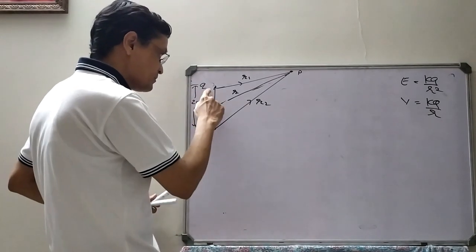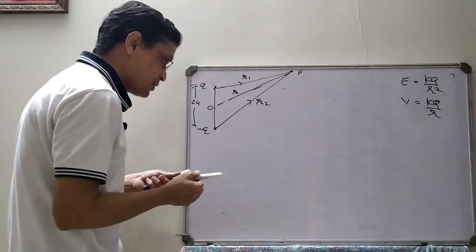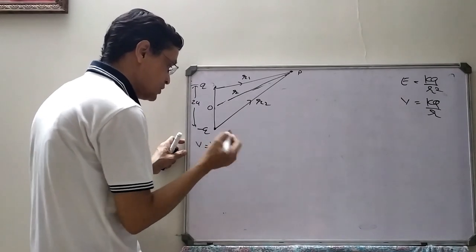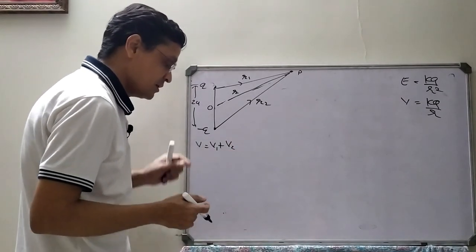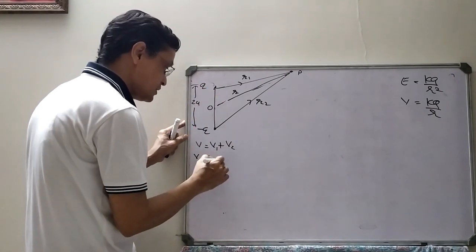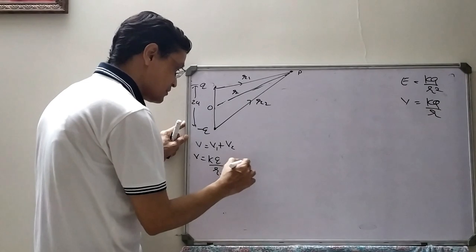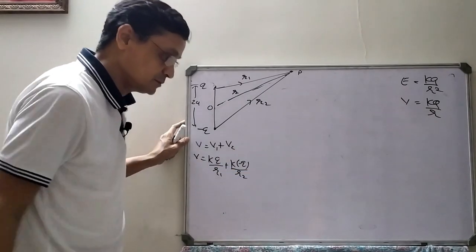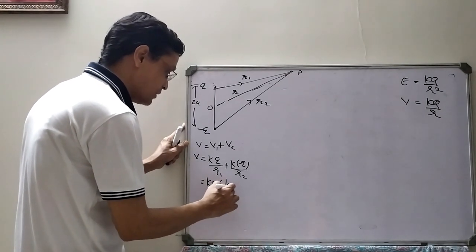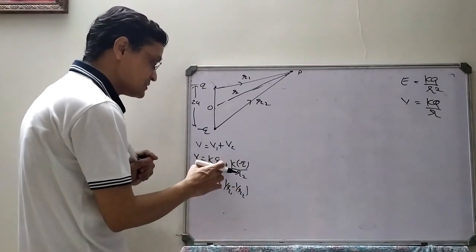The electric potential at point P is V equal to V1 plus V2. The potential due to plus Q is k times plus Q divided by r1, and the potential due to minus Q is k times minus Q divided by r2. So the net potential is V equals kQ times (1 upon r1 minus 1 upon r2). This is equation number 1.